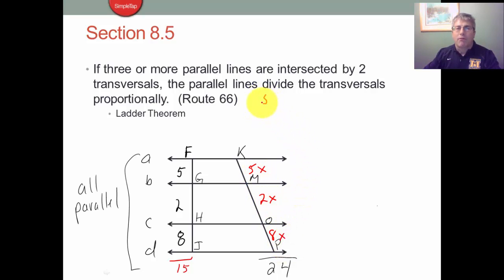Sure enough, we can say 5x plus 2x plus 8x equals 24, which is 15x equals 24, and x is equal to 24 fifteenths. They're both divisible by 3, so 8 fifths.